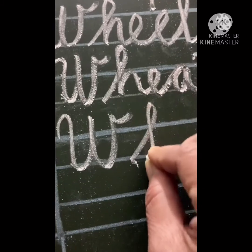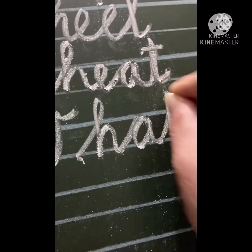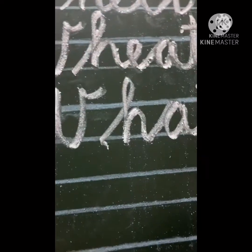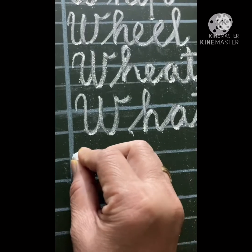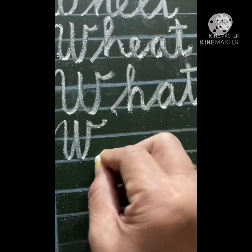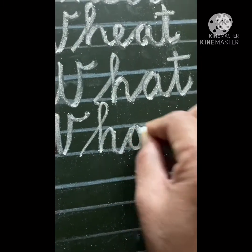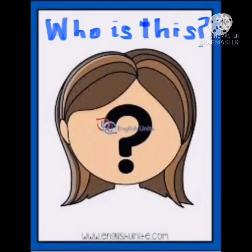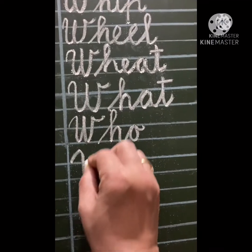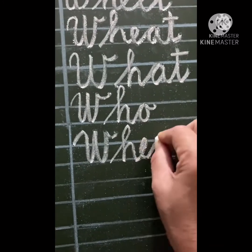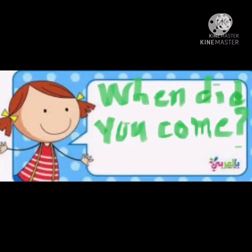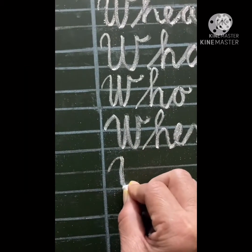Next is W-H-A-T — what, used for asking something. Next is W-H-O — who, used for asking about somebody: 'Who is this?' Next is W-H-E-N — when, used for asking about time: 'When did you come?'